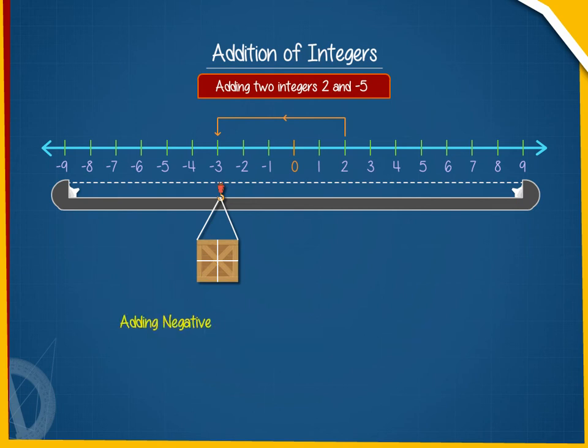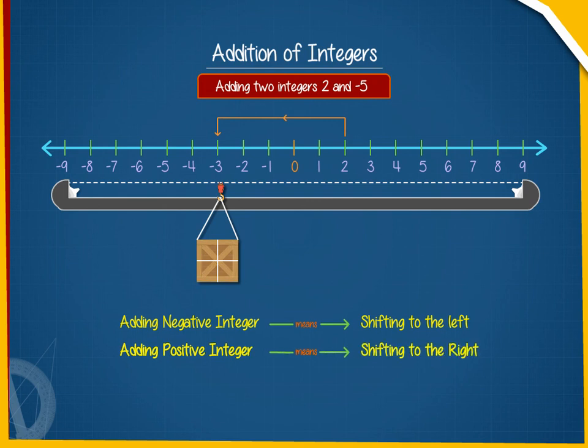Adding a negative integer means shifting to the left and adding a positive integer means shifting to the right on the number line.